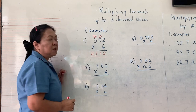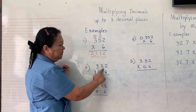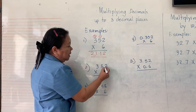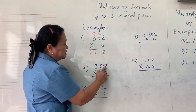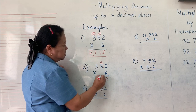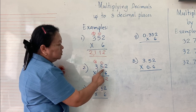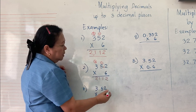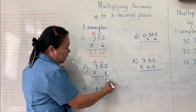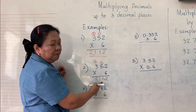Now, in this case, we have one decimal place. This 2 is the so-called decimal number because it is the number after the decimal point. 6 times 2 equals 12, carry 1. 6 times 5 equals 30 plus 1 equals 31, carry 3. 6 times 3 is 18 plus 3 is 21. But it's not yet finished — we need to count how many decimal places there are. Here we have 1, therefore you will count 1 digit from the right and write the decimal point. The answer is 211.2.